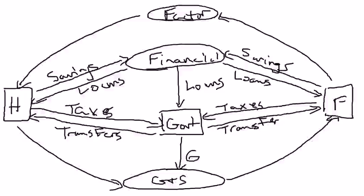Hi, everyone. Now that we've explained the basic working of the circular flow, I want to show you how we can use the circular flow to illustrate some important economic intuition. An obvious place to start is fiscal policy, which is just a fancy way of saying what's the effect on the economy of the government's decision to tax a little bit more or less, increase transfer payments or government spending by a little bit more or less.